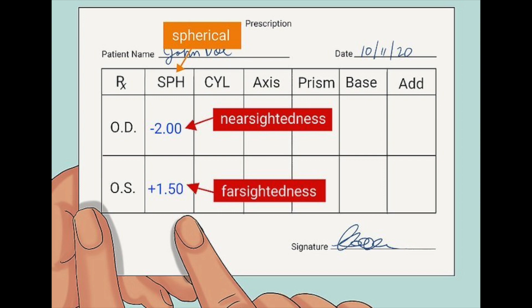You can tell if you're nearsighted just by looking at the numbers on your glasses prescription. Look at the first set of numbers under the column called sphere. What you want to look at is the sign in front of this number — either a plus or minus sign. If the sign is a minus, that means you're nearsighted, and the higher that number is, the more nearsighted you are.